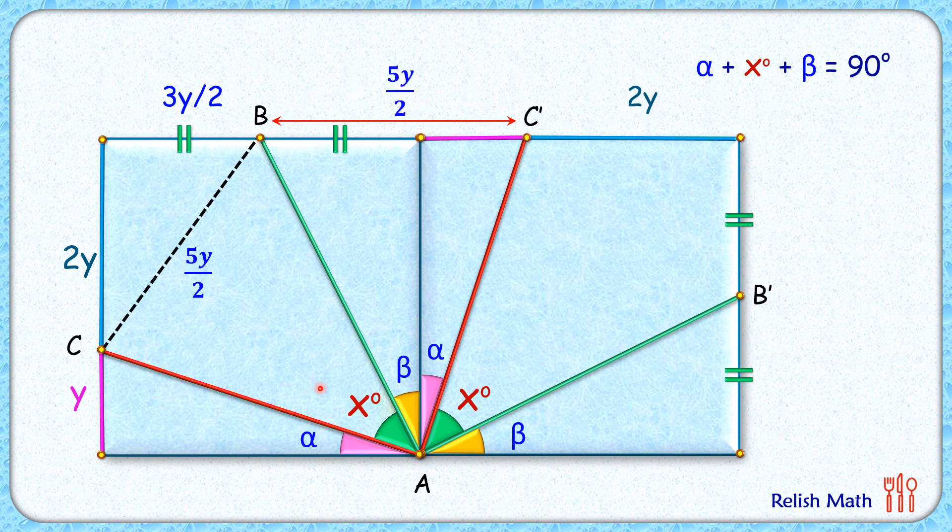Now if you look at these two triangles—this yellow triangle and this pink triangle—the length AC and AC' are equal, AB is common, and this length BC and BC' are both equal to 5y by 2. Thus, by side-side-side theorem, both triangles are congruent.